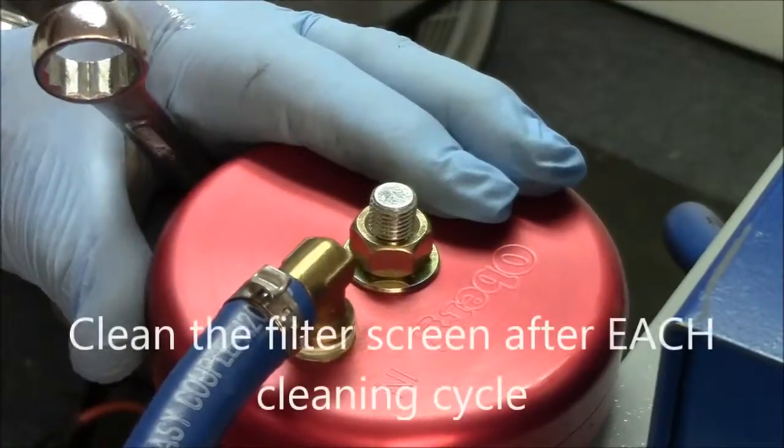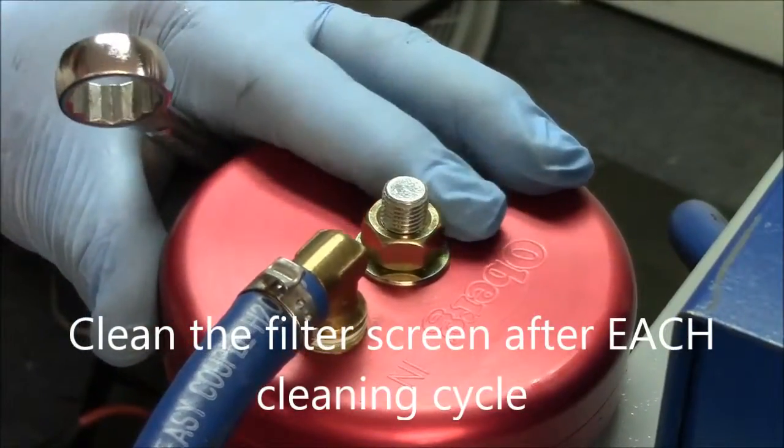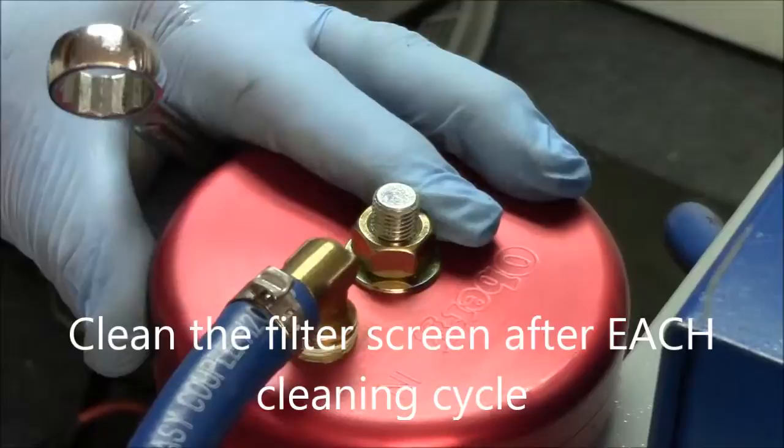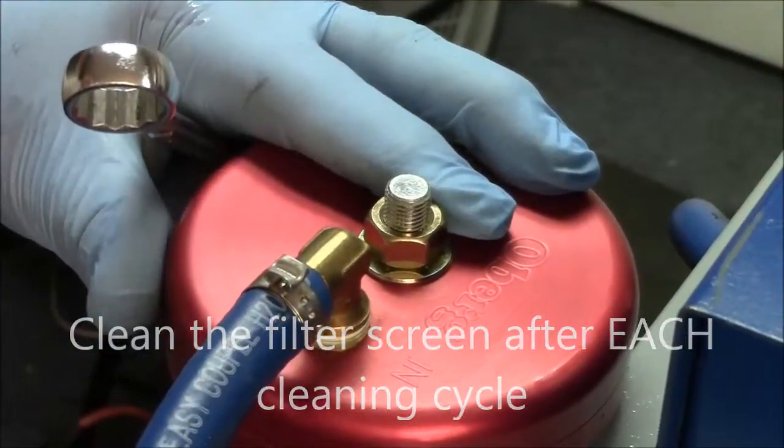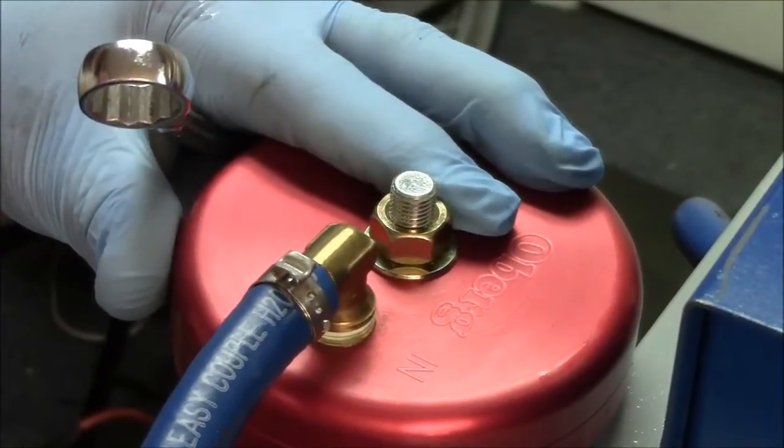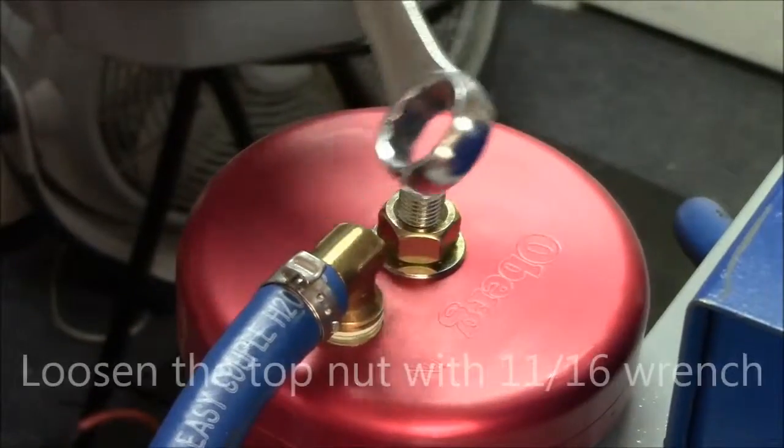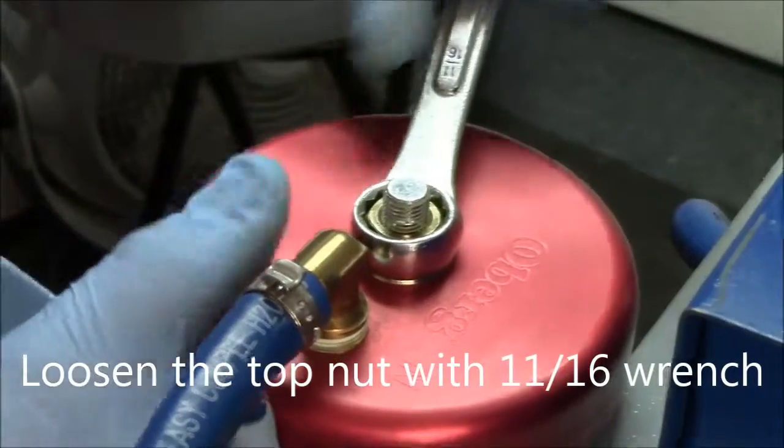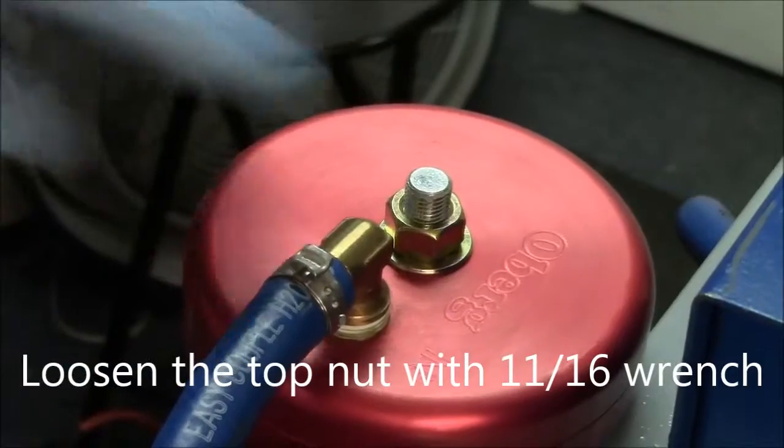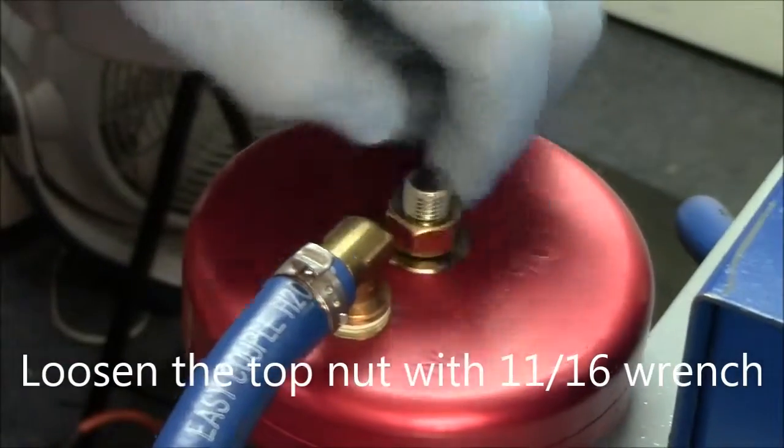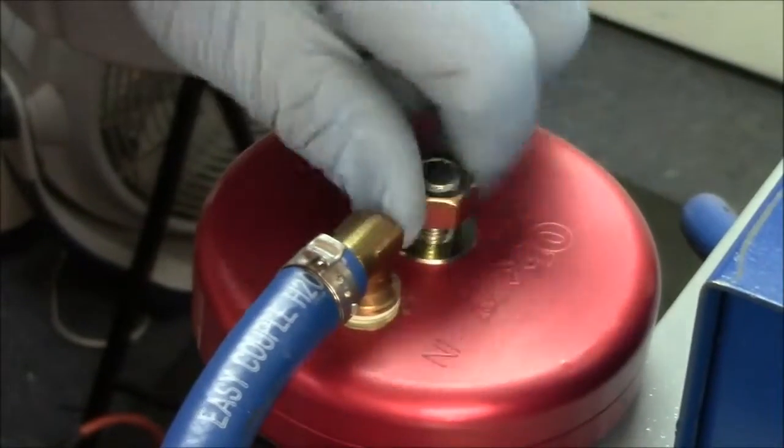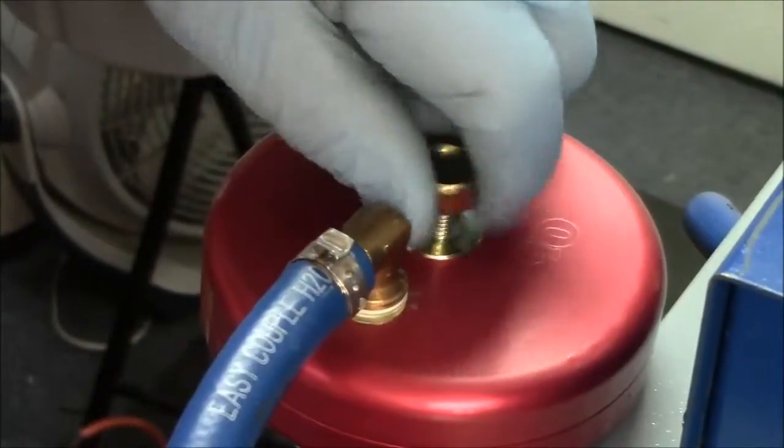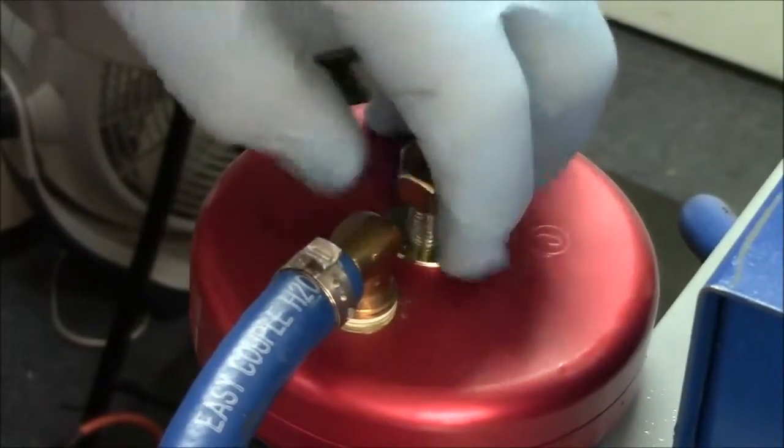The screen must be cleaned between every cycle because when it plugs up it will literally stop the motor because you can't get any oil past that screen. Now all you do is take an 11/16 inch wrench and put it on top. Do not use an impact on this because you are dealing with a UFO filter, a sandwiched aluminum filter.